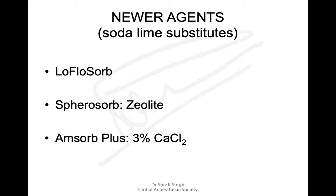There are also newer agents called soda lime substitutes. Low-flow sorb uses only sodium hydroxide. Spherosorb is similar to standard soda lime but also contains zeolite — zeolite is used to trap nitrogen in oxygen concentrators. Amsorb Plus contains only calcium chloride and does not have sodium hydroxide. Low-flow sorb and Amsorb Plus work slower, while Spherosorb works as a normal soda lime — this is what is currently used.